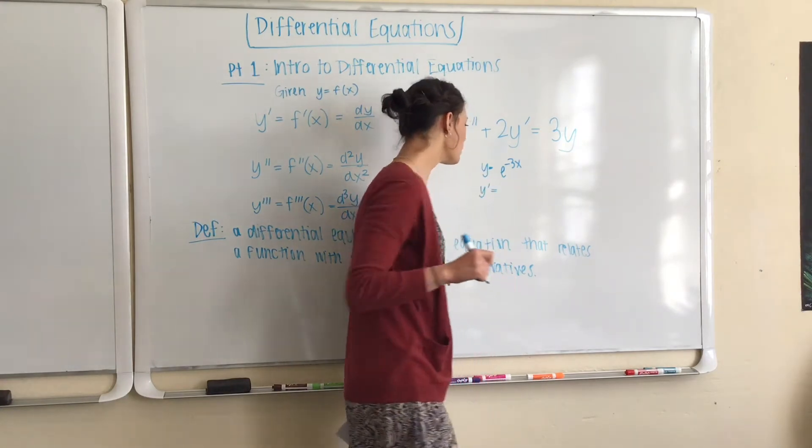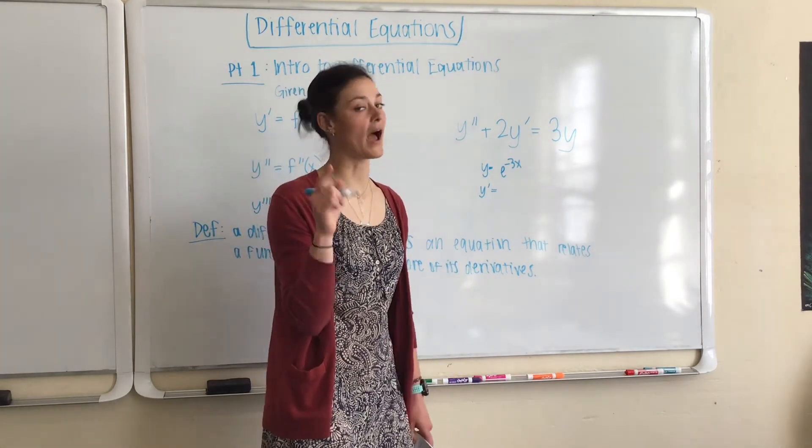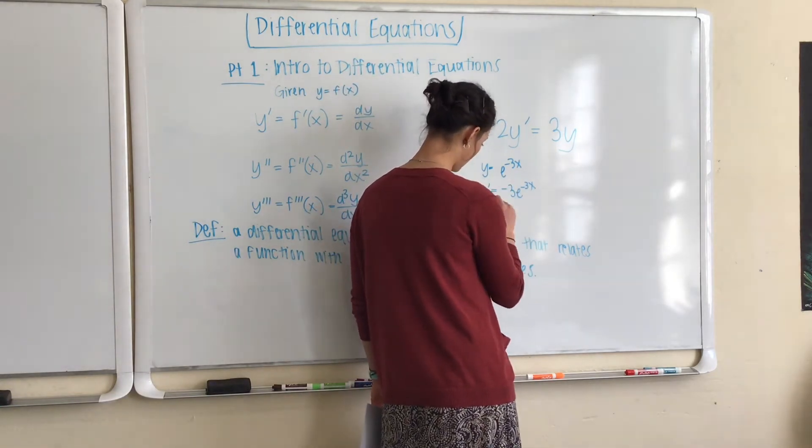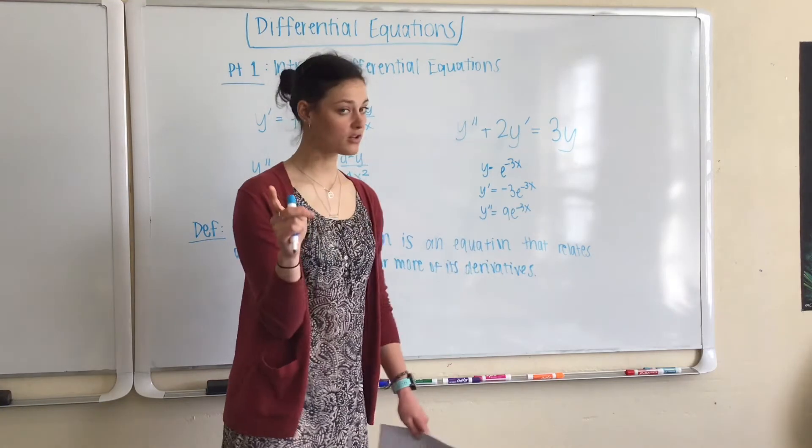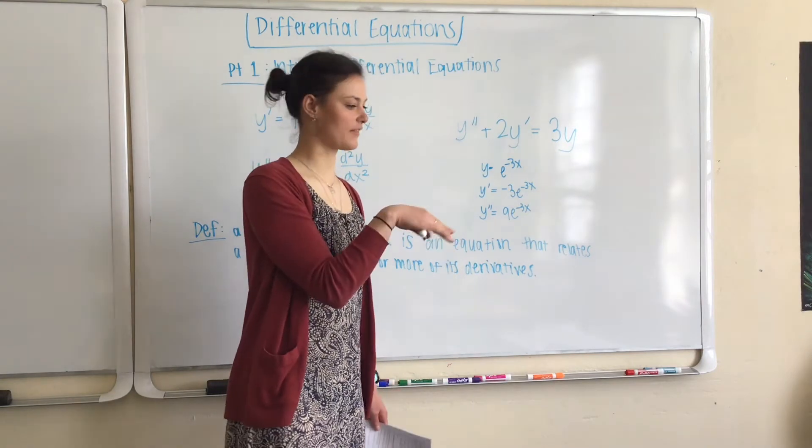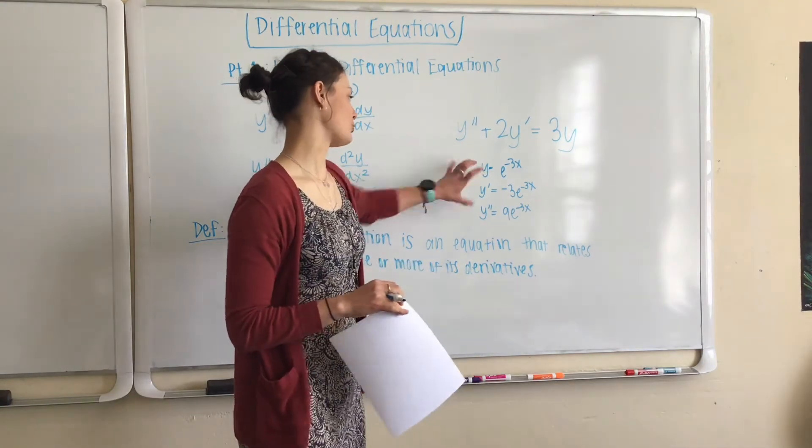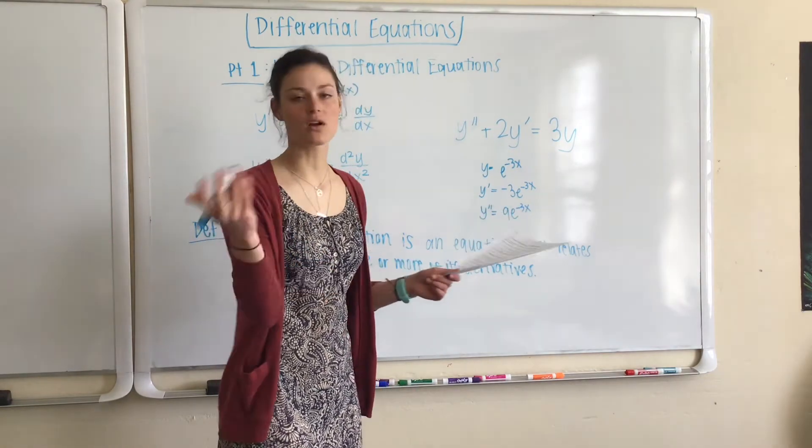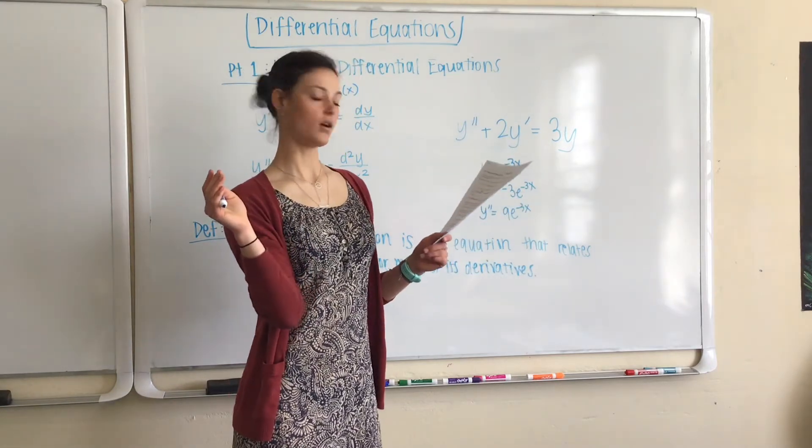So, y' is equal to, hopefully you remember your e derivative rules and whatnot. If you don't, definitely go back and brush up on those. But the first derivative is going to be -3e^(-3x), and the second derivative is going to be 9e^(-3x). And again, if you don't understand where those came from, I really want you to go back to your derivative notes. Or you can come to a tutorial and we'll talk through it.